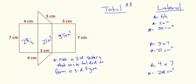So my lateral area, I would just add up 35 plus 21 plus 28. So my lateral surface area is 84 square centimeters.